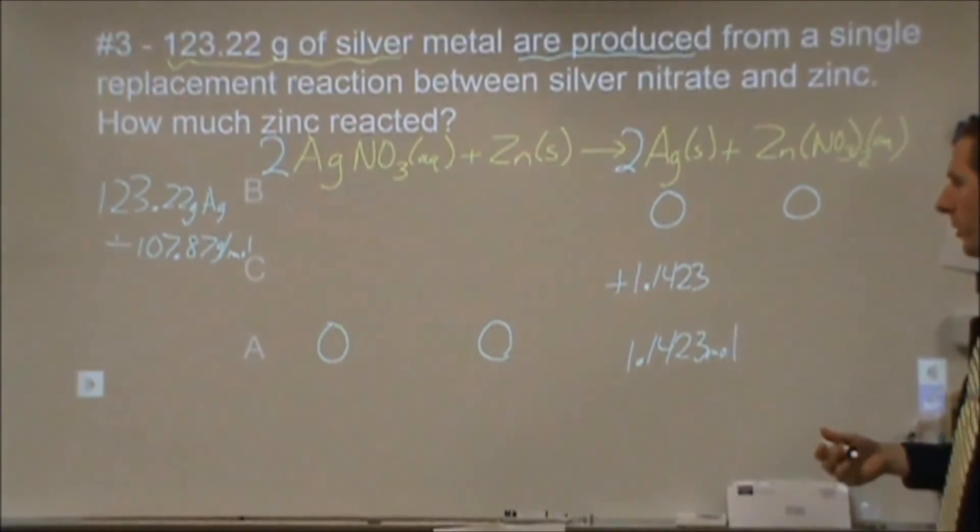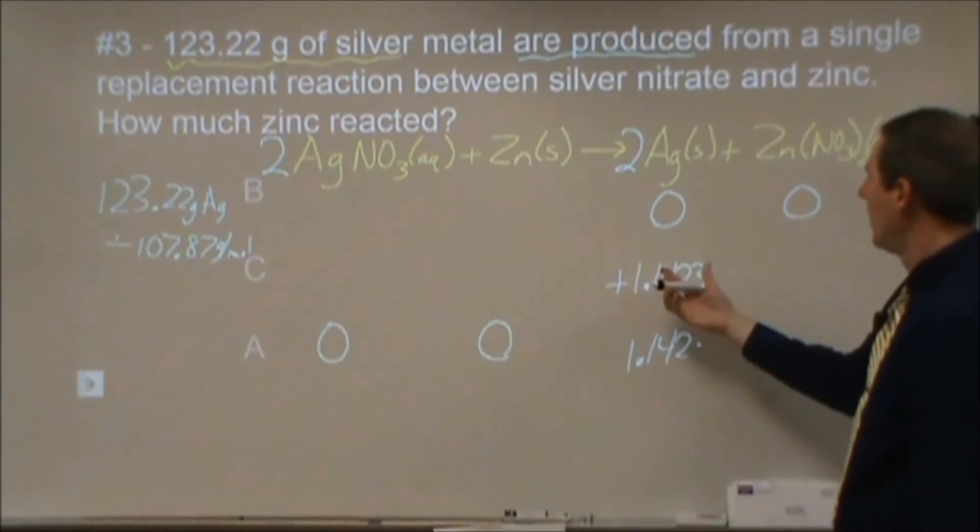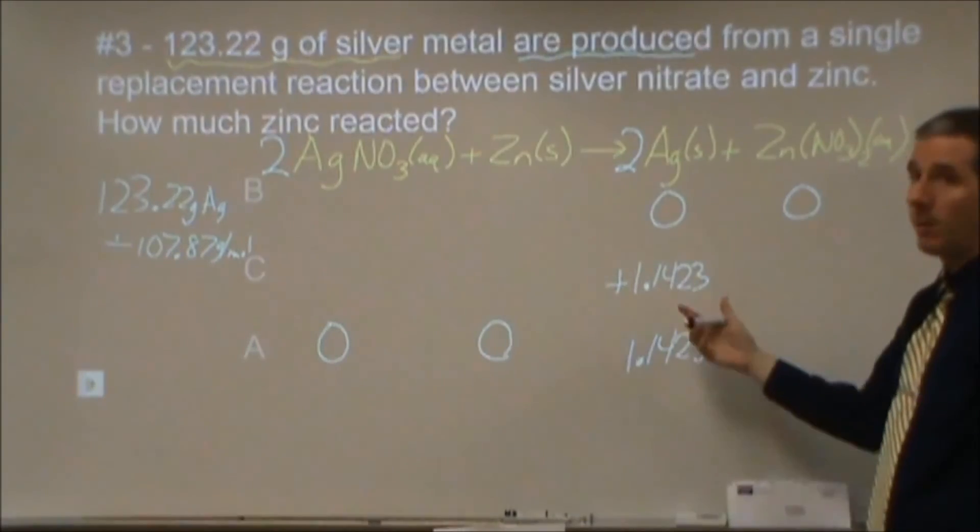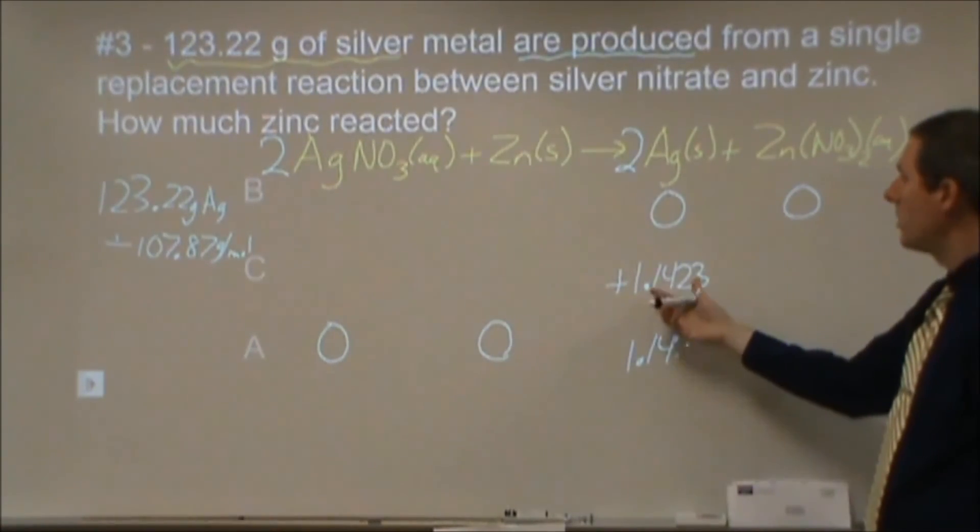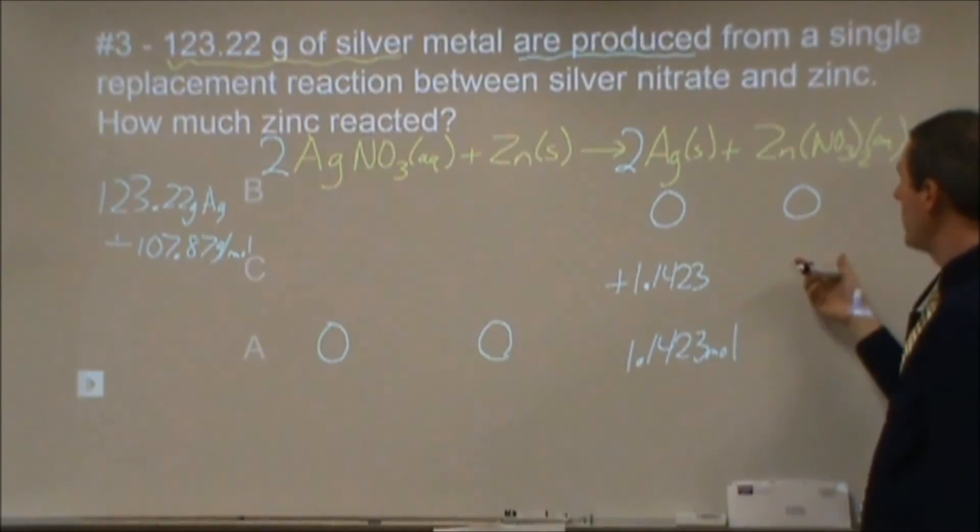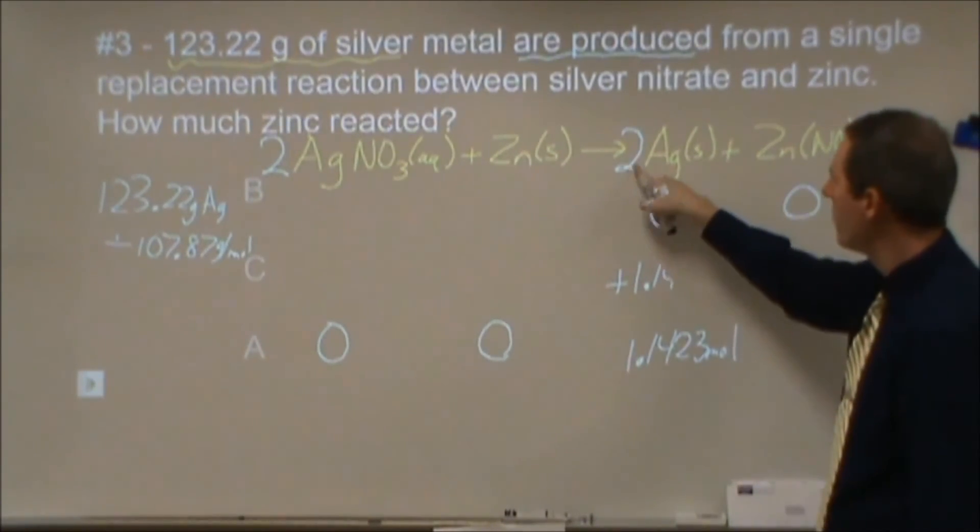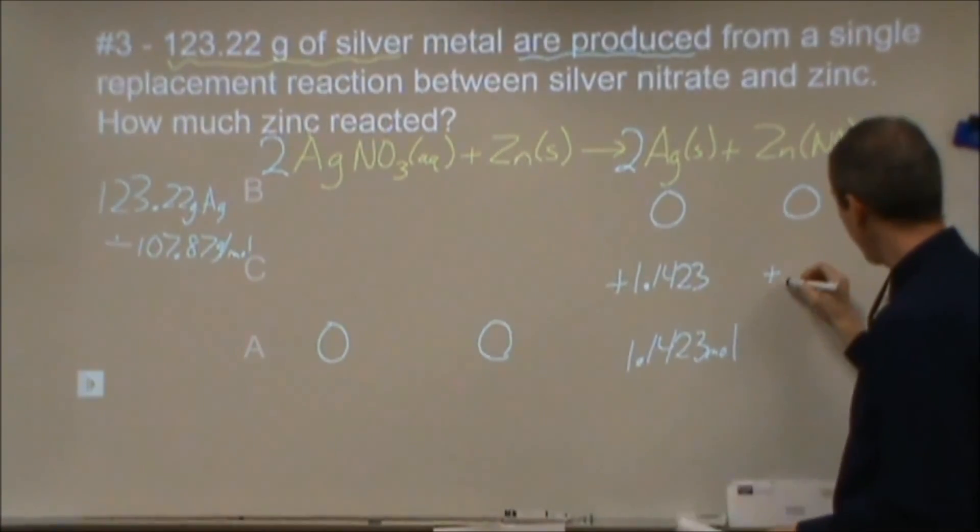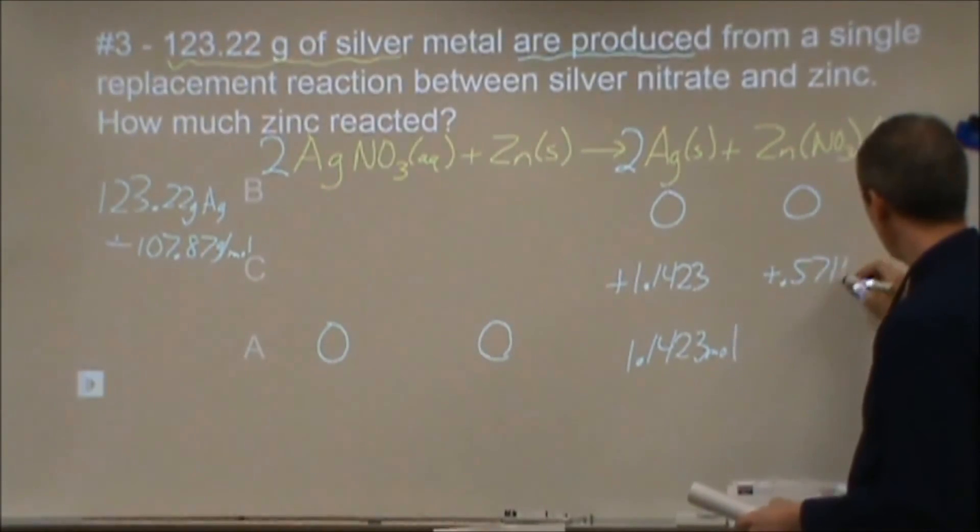If you're following along and you haven't worked through the problem yet, just think for a second. What would we expect to be the amount of zinc nitrate that accompanies this? Should we divide this by 2 or should we multiply this by 2? For this amount, we're getting 1 of these for every 2 of them. We should have more silver than we have zinc nitrate. So for this, we're going to have half this amount, which is 0.57115.